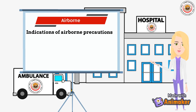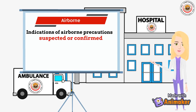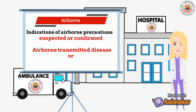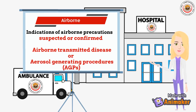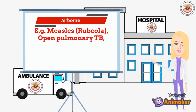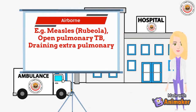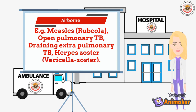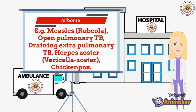Indications of airborne precautions include care of suspected or confirmed patients with airborne-transmitted disease or aerosol-generating procedures. For example: measles, open pulmonary TB, draining extra-pulmonary TB, herpes zoster, and chickenpox.